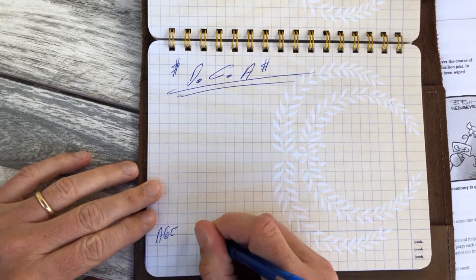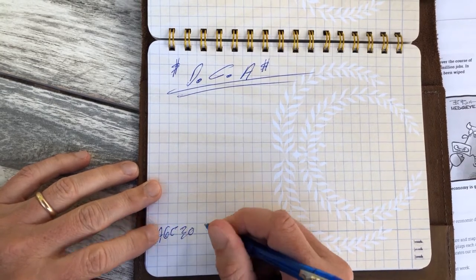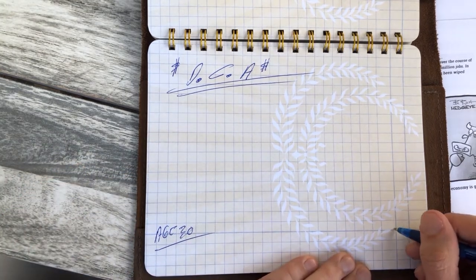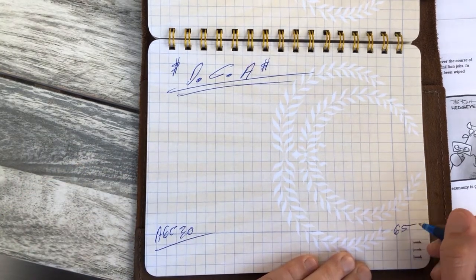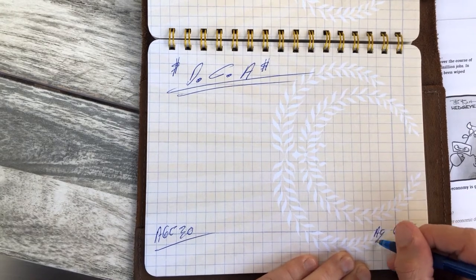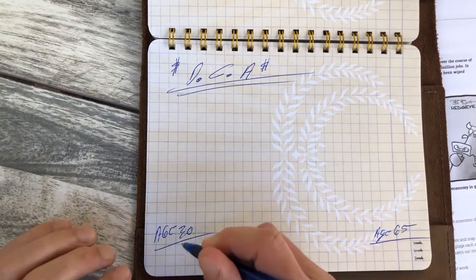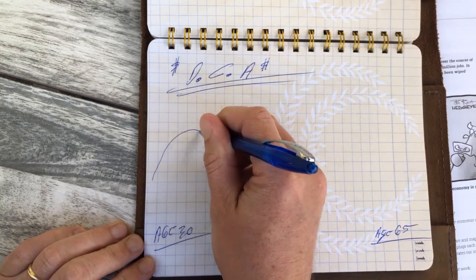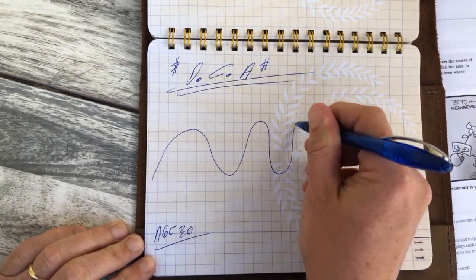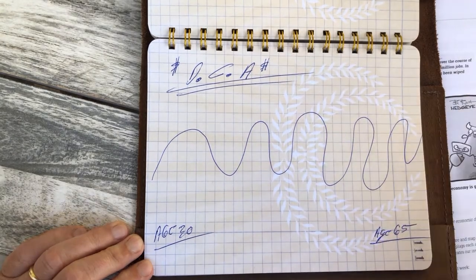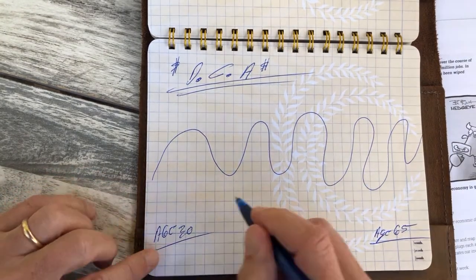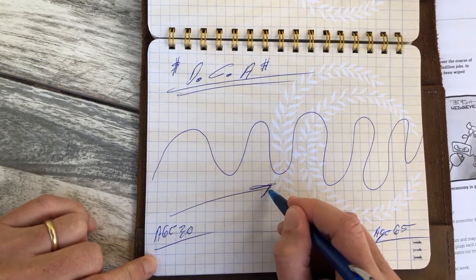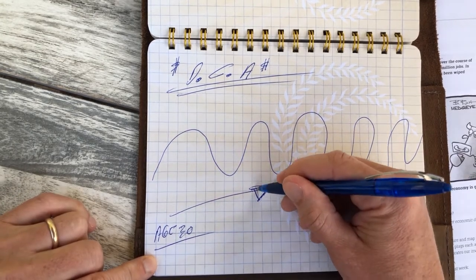30 years old and you plan to retire at 65 years old. And during that time, the stock market does this. All right, let's imagine it's going higher over the long term.